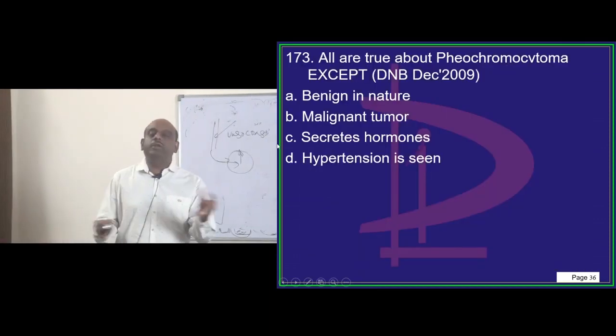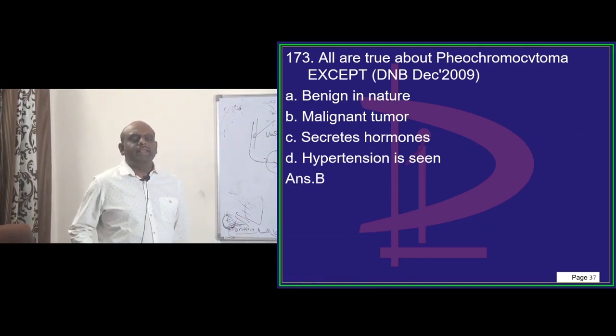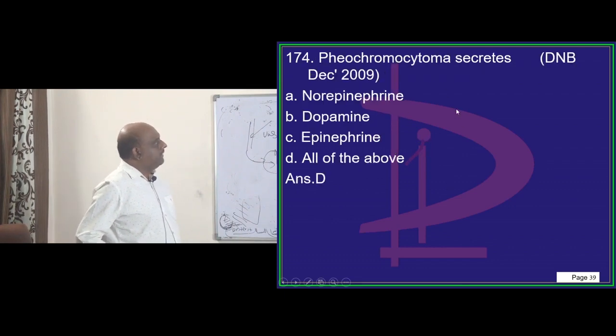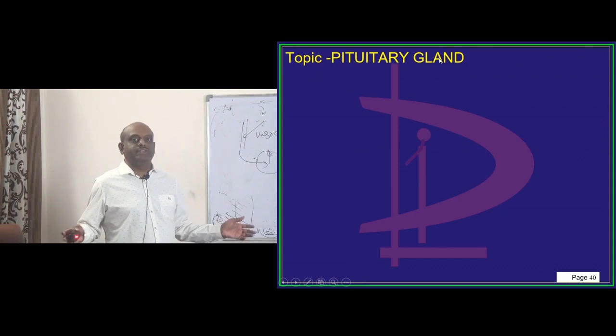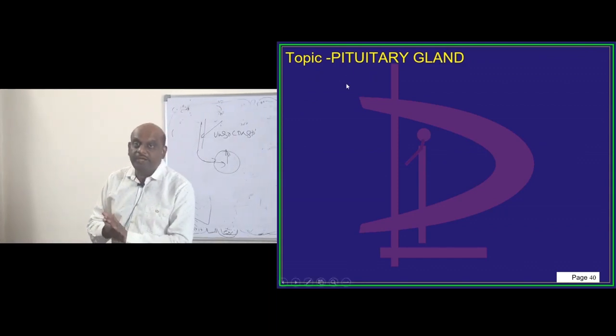These are all true about Pheo, except what? It is not malignant - only 10% are malignant. Pheo secretes epinephrine, dopamine, norepinephrine, any of these things. That is all the story of pheochromocytoma, doctor.